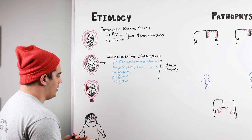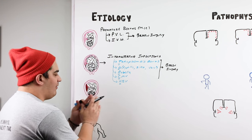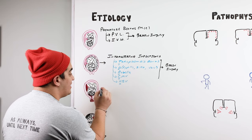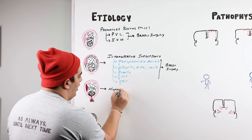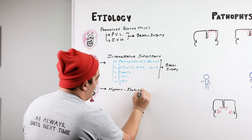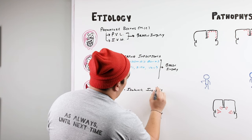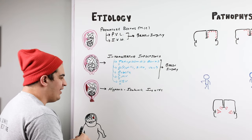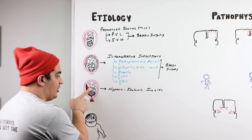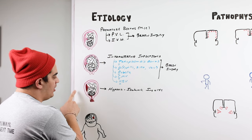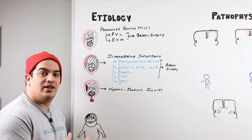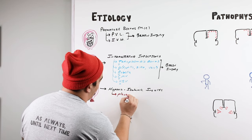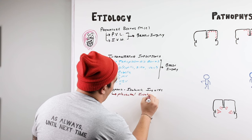Another major etiology is whenever there's not enough blood flow or oxygen getting to the fetal brain — what we call hypoxic or ischemic insults. One of the big ones to remember, especially for your exams, is any type of placental issue. The placenta is responsible for supplying oxygen to the fetus, so a placental abruption, placenta previa, or any type of placental insufficiency can lead to inadequate oxygen delivery.